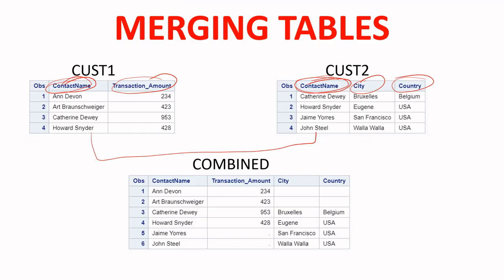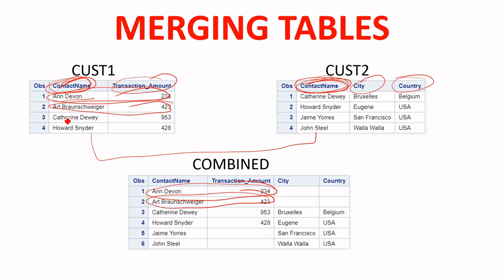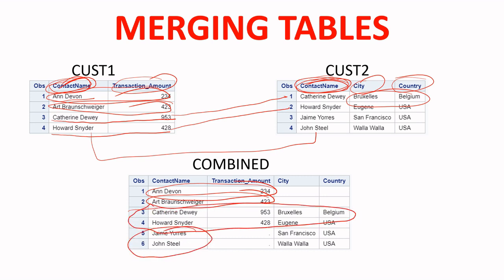In the first table we had contact name and in the second table we also had contact name. SAS looked for matching values. For customers like Catherine and Howard Schneider, matching values existed in both tables, so SAS brought all values together. For customers only in one table, SAS still included them and left the missing fields blank.